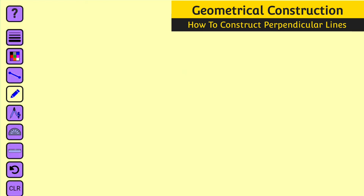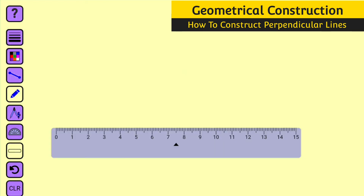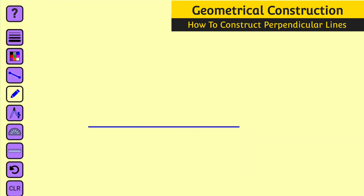First, construct a straight line — it's a straight line. Let me place a point here and call it point P.